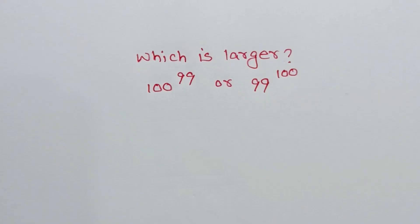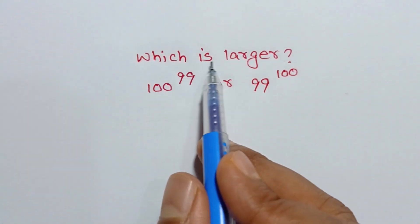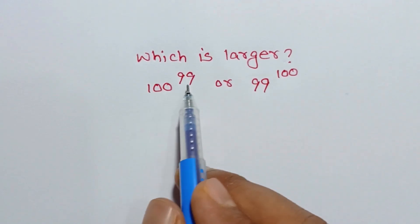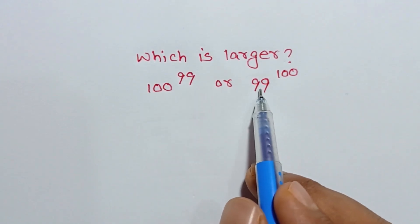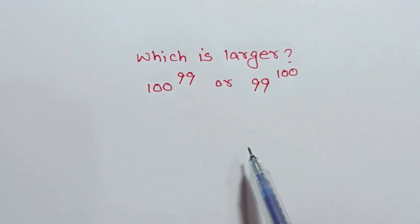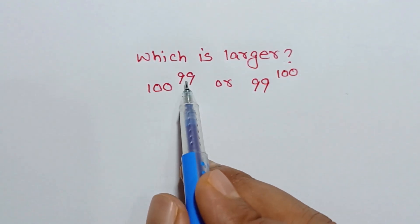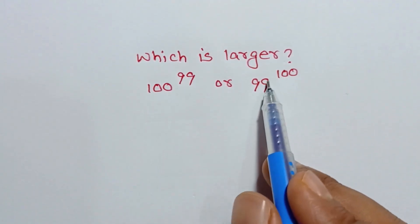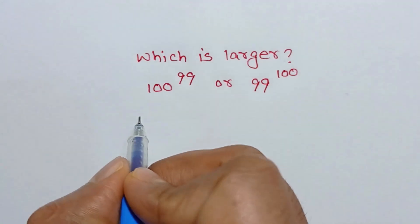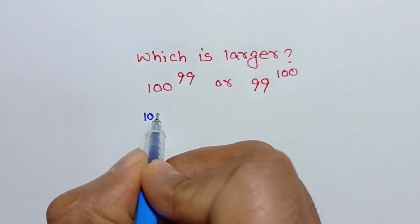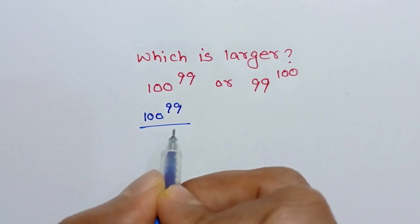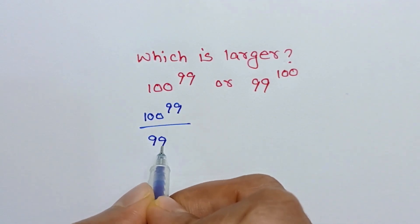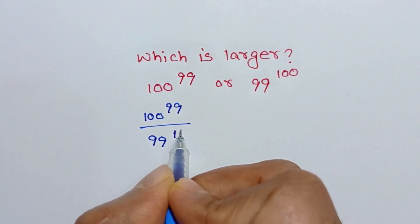Hi everyone. In this video I am going to find which is larger: 100 to the power 99, or 99 to the power 100. If we divide the first number by the second number, we can write 100 to the power 99 over 99 to the power 100.